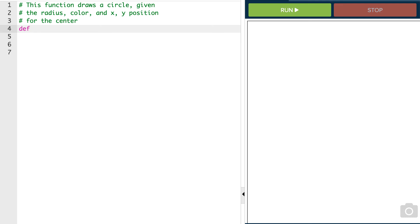So let's define our draw circle function. So again, it's going to take several variables in here for parameters. It's going to take the radius, the color, and our x and y coordinates.